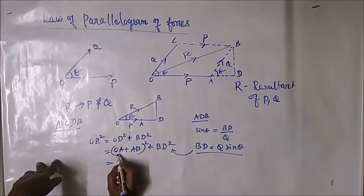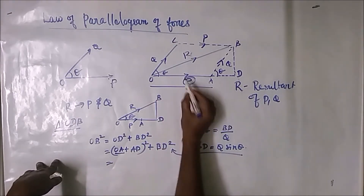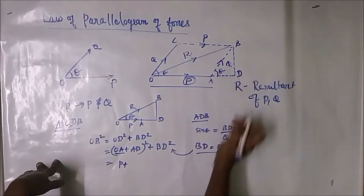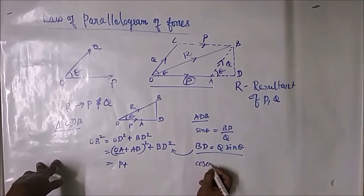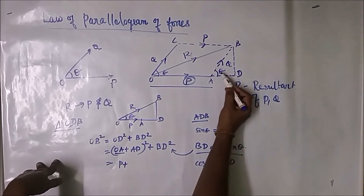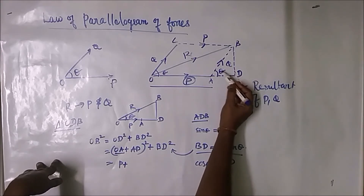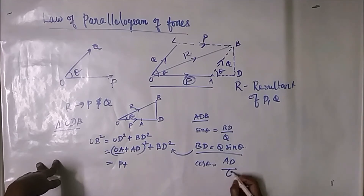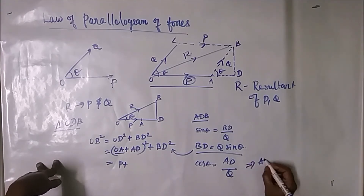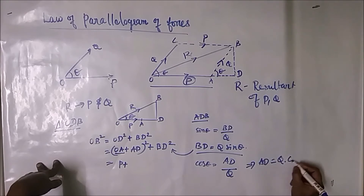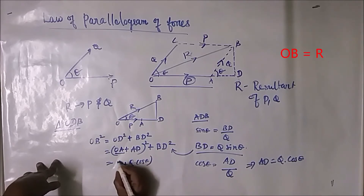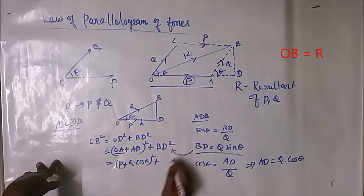We know that OA equals P. So OD equals P plus AD. To find AD: from the triangle, cos theta equals adjacent side AD divided by hypotenuse Q, so AD equals Q cos theta. Now substituting both values: OD equals P plus Q cos theta, and BD equals Q sin theta. Therefore OB squared equals P plus Q cos theta, all squared, plus Q sin theta, all squared.